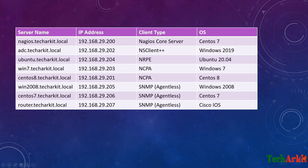I also have an ADC which is an Active Directory server installed with NSClient++ on Windows 2019. I have an Ubuntu machine installed with the NRPE agent running Ubuntu 20.04, a Windows 7 machine installed with NCPA, a CentOS 8 and Windows 2008 machine with SNMP installed and configured, a CentOS 7 client with SNMP enabled, and one more which is a router configured with SNMP for agentless monitoring running Cisco IOS.